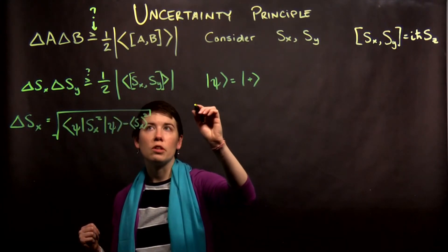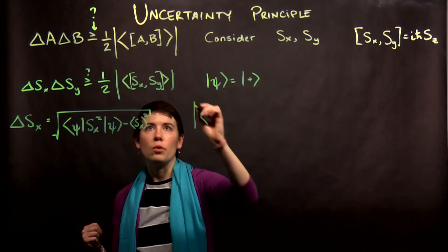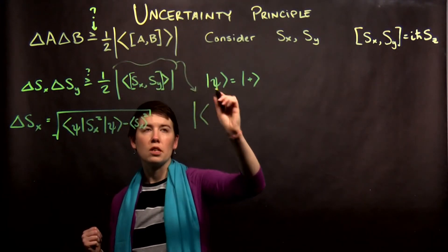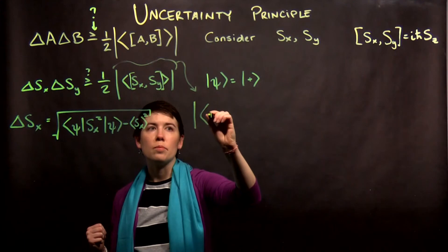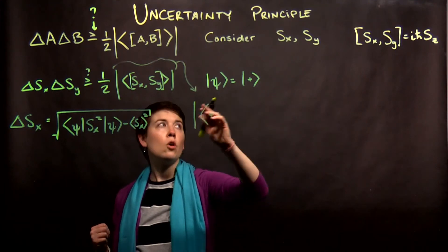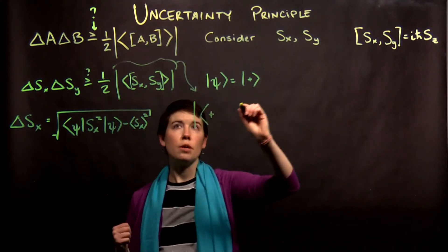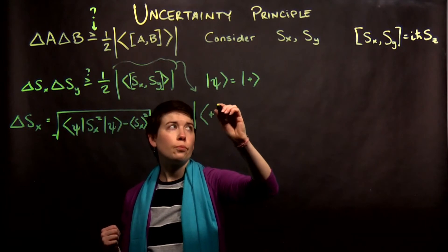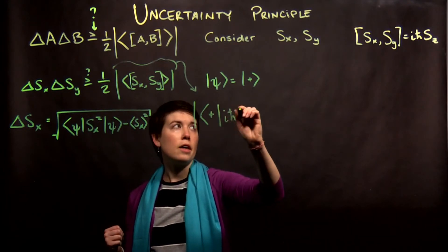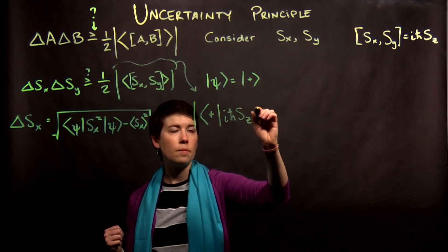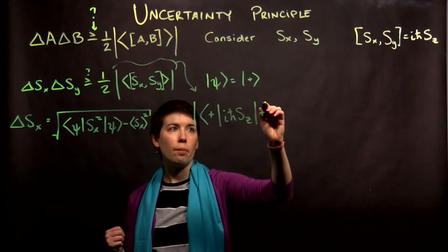but then what we also are going to have is that what this becomes, I'm just bringing it down here, is going to be my plus ket state with the commutation relationship, and we know that's going to give me i h-bar Sz, and then spin up.